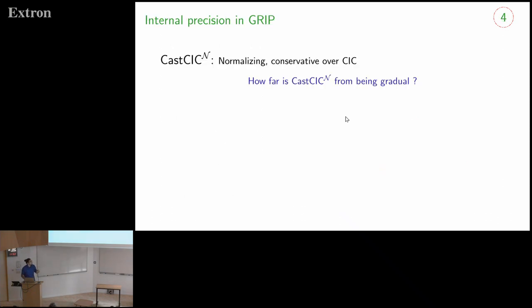What I would like to talk more about in this talk is how can we go further than just stating, okay, we have this language which is normalizing, conservative over CIC. It has some cast operation. We can check on some examples that some things are working with respect to this cast, but in general, we don't know how to globally characterize the gradual properties. And what can we do about going further than that? Just saying, okay, we don't really know what we can say about cast.